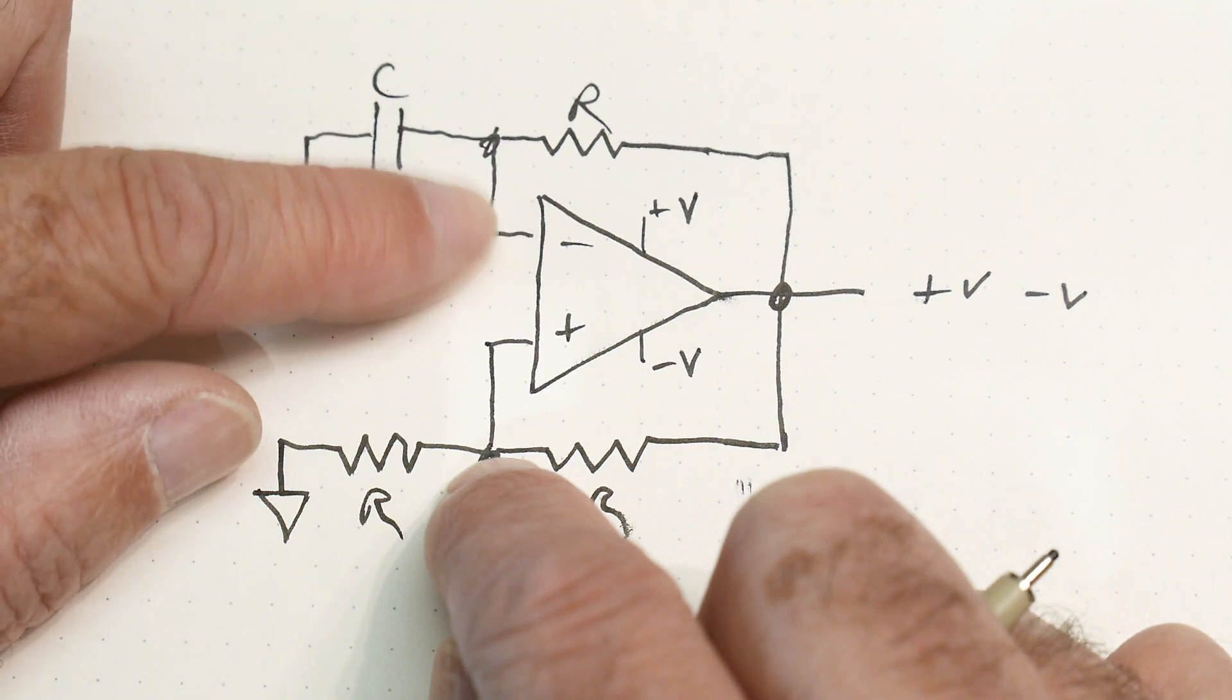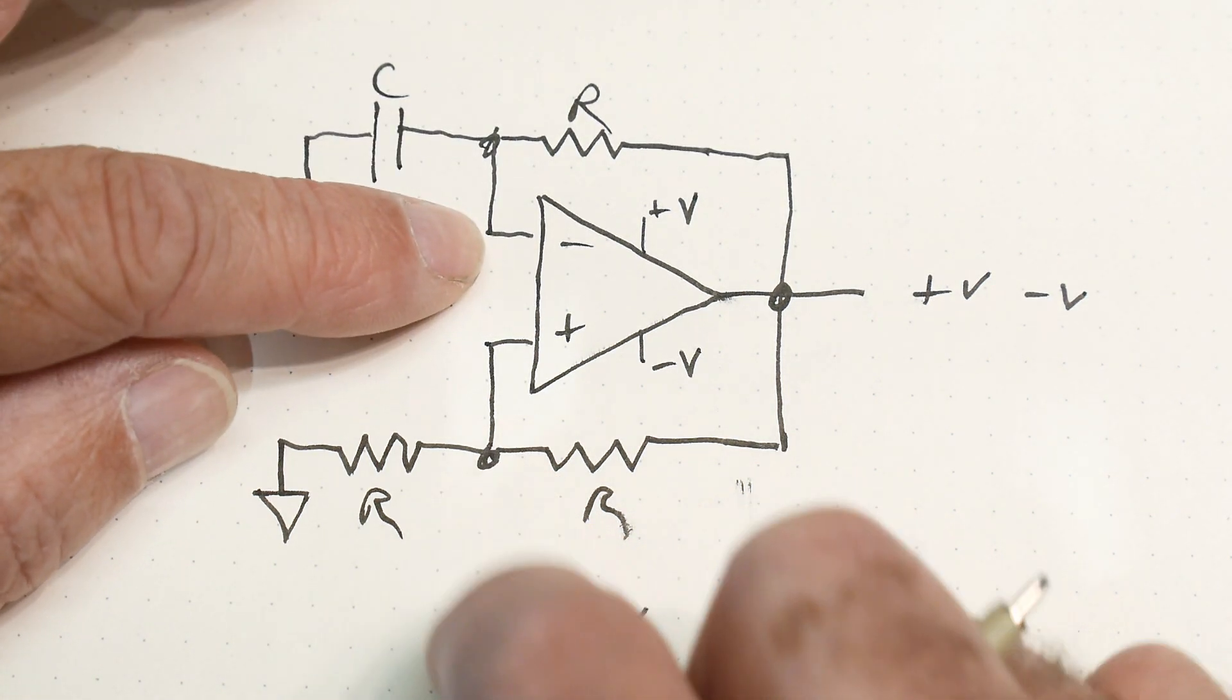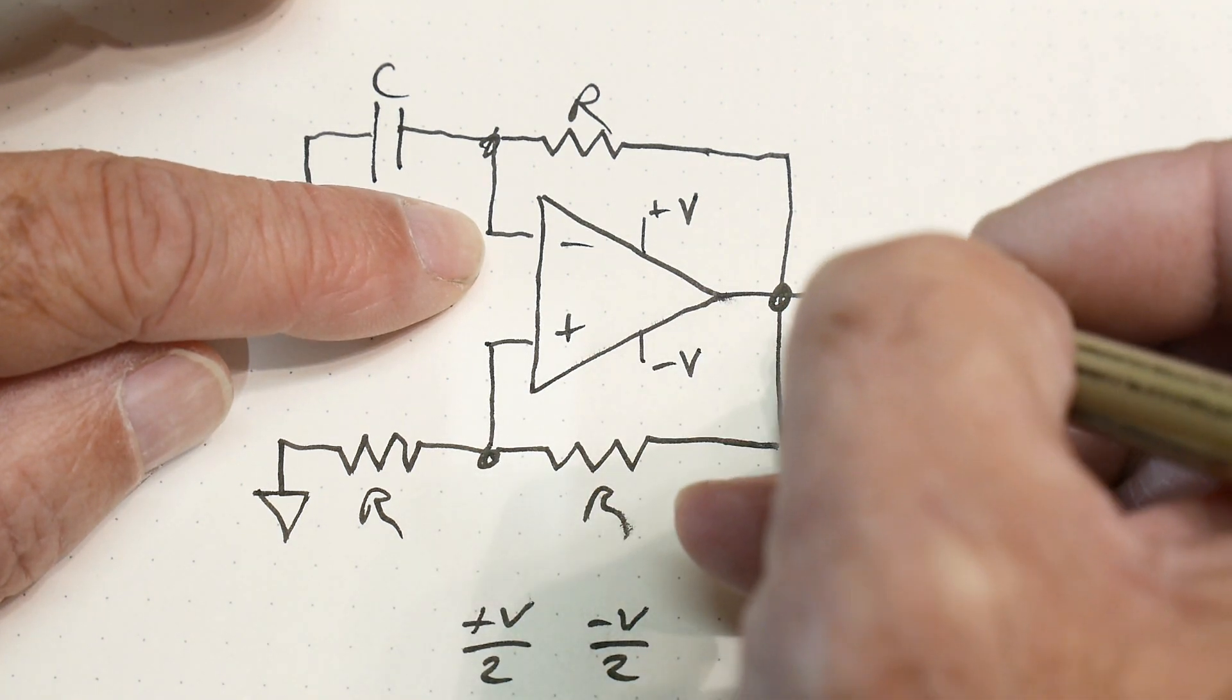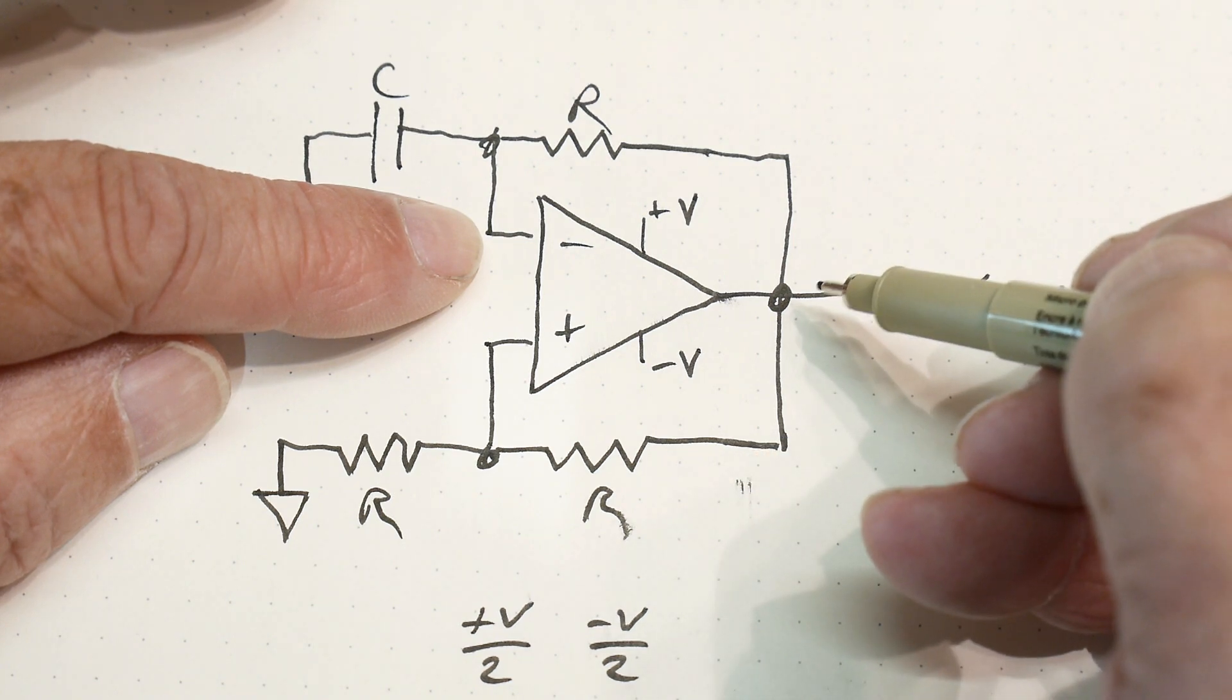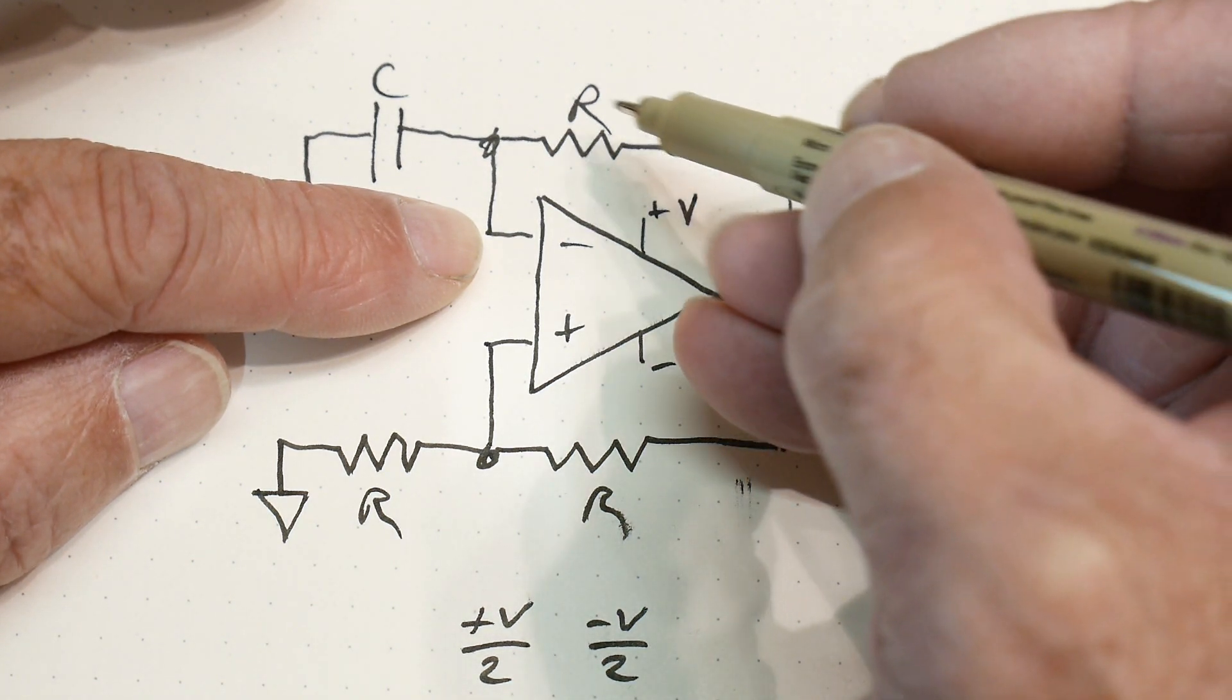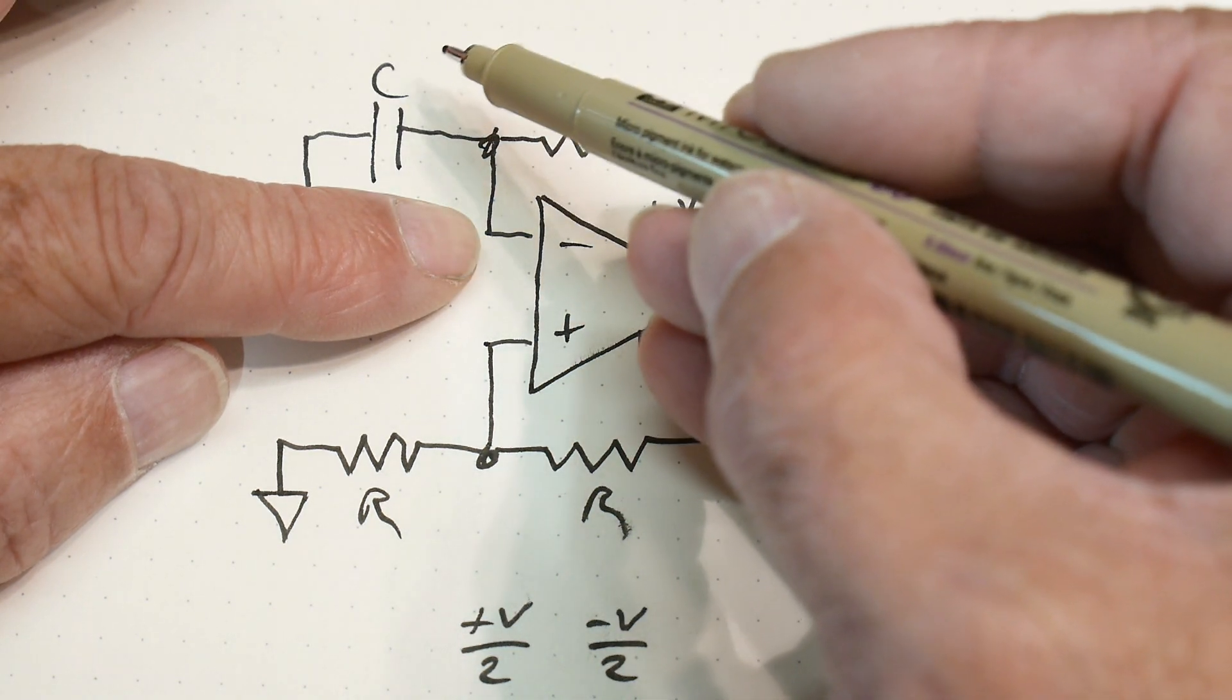And the op amp wants this node here to be plus V over 2. And so it's going to take this plus V that's here and the current is going to go through this R into this capacitor and that capacitor is going to start to ramp up.